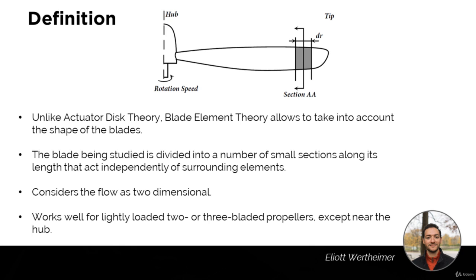This theory works very well for lightly loaded two or three bladed propellers, except near the hub. The fewer blades you have, the more independent they are from each other. Also, the lower the propeller is loaded — meaning less power going through the propeller — the less unstable and turbulent the flow is. Near the hub, the geometry is so different from that of the blade that the impact on each section is more important, making calculations less accurate since we are considering the flow as two-dimensional whereas in real life it is three-dimensional.